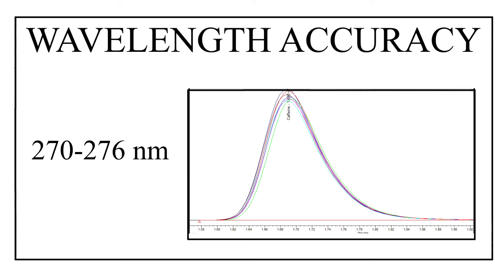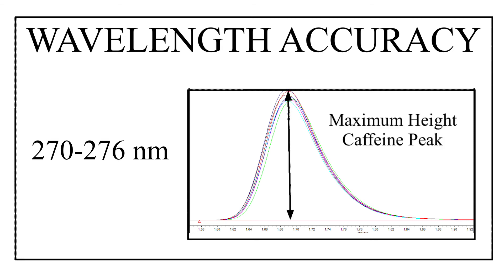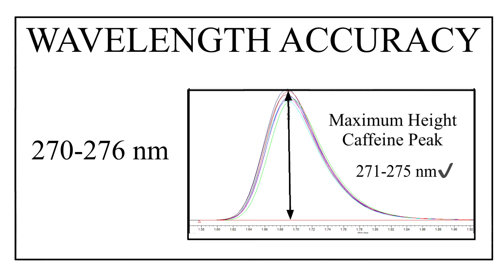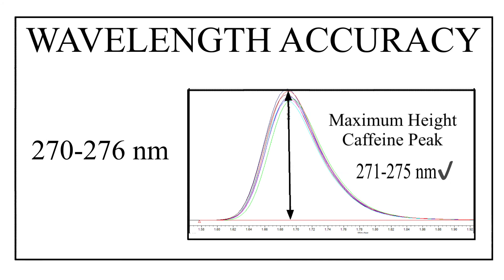Finally, the caffeine peak obtained from the wavelength range 270 to 276 nanometers is evaluated for maximum height, and it should be between 271 and 275 nanometers. This concludes the wavelength accuracy test evaluation.